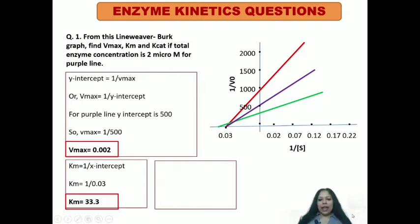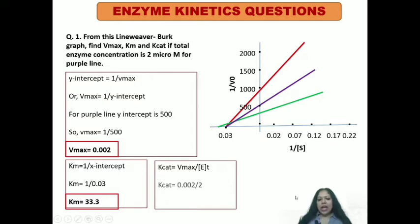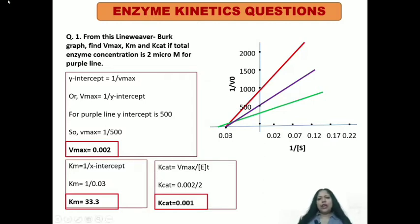Now coming to Kcat. If you know the formula, Kcat is equal to Vmax divided by total enzyme concentration. We know that Vmax equals Kcat multiplied by Et. From that, Kcat equals Vmax upon Et. We have calculated Vmax as 0.002 and total enzyme concentration is given as 2 micromolars, so the value of Kcat is 0.001. If units are not given in the question, you are not supposed to give units in the answer.